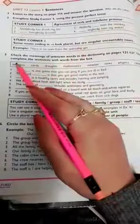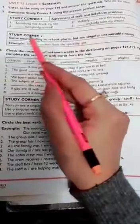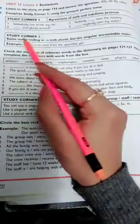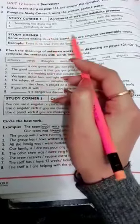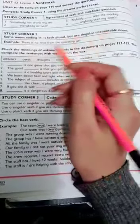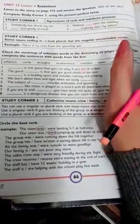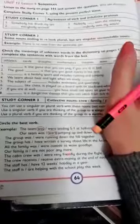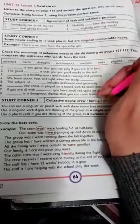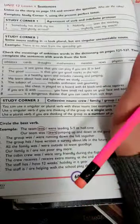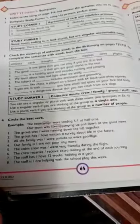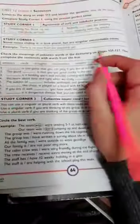Before moving towards Exercise 3, let me explain how we are going to do this. Here you can see in this study corner that some nouns ending in 's' look plural but are singular, uncountable nouns. There are some nouns that end with 's' but they are not plural. They look plural but are actually singular nouns, and they are uncountable nouns.